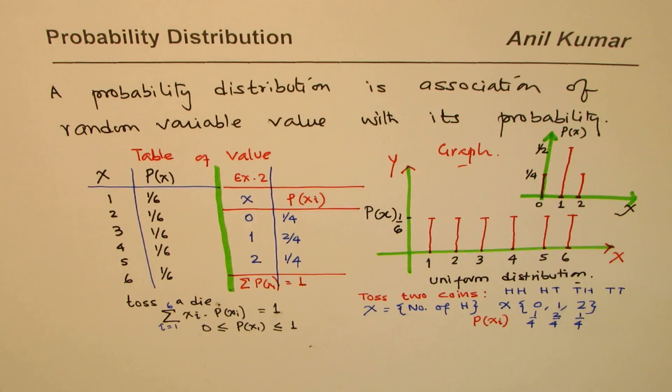Probability distribution is association of random variables with its probability, which can be shown on a table of values or on a graph, as we have discussed in this video. I'm Anil Kumar, and I hope that helps. Thank you, and all the best.